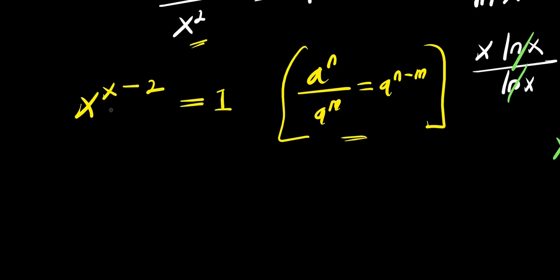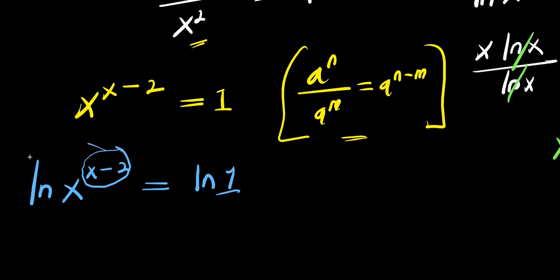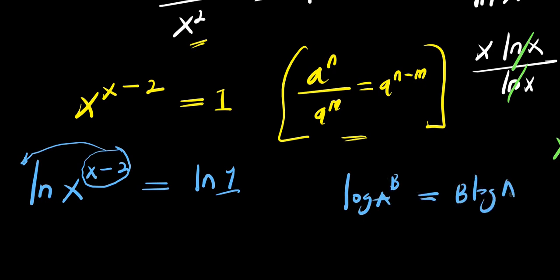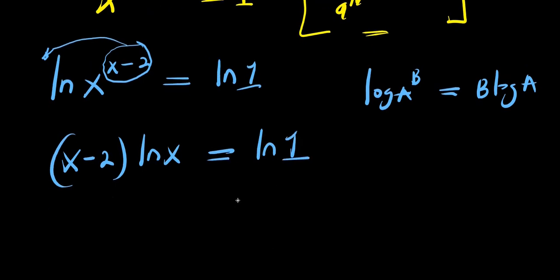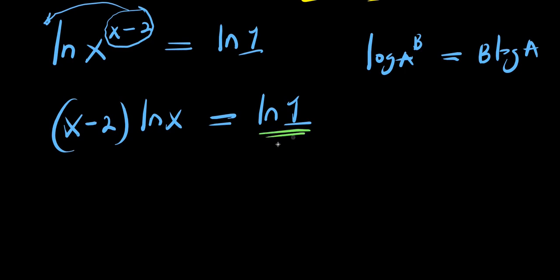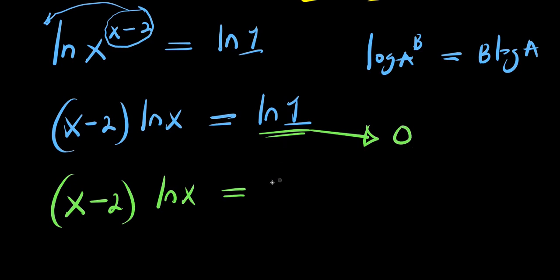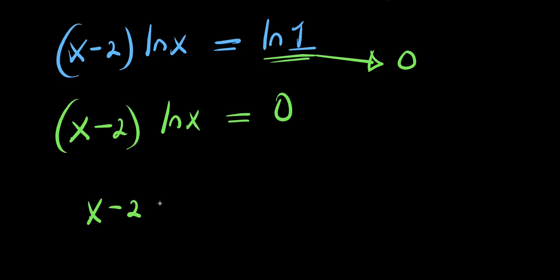At this point we apply natural log: ln(x^(x−2)) = ln(1). Bringing the exponent (x−2) in front using the log power rule gives (x−2)·ln(x) = ln(1). Since ln(1) = 0, we have (x−2)·ln(x) = 0. We can now formulate two separate equations: x − 2 = 0, or ln(x) = 0.